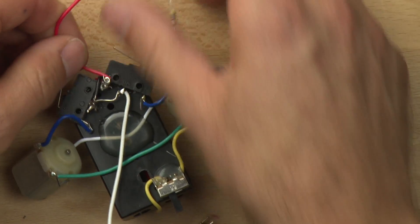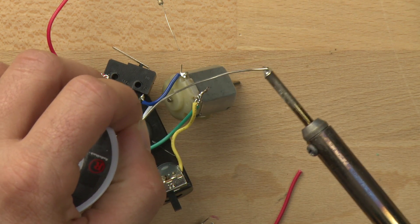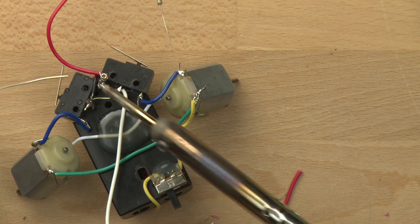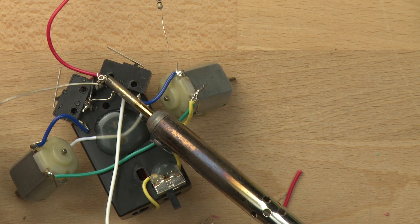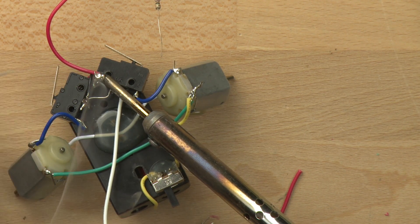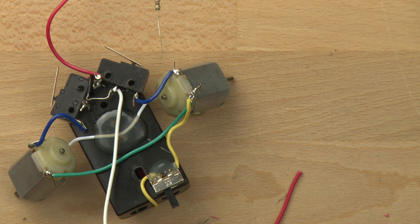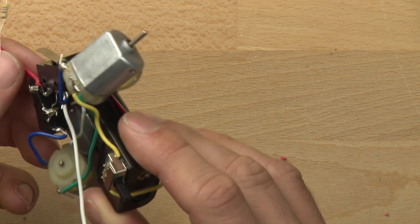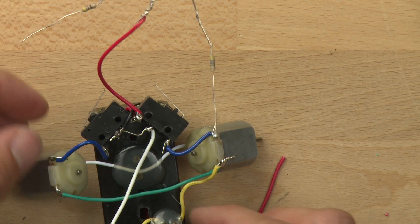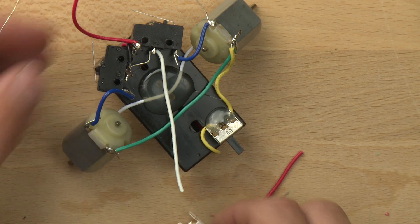Once we've got the red wire there, we can go ahead and solder that in place. And you can see it looks like we've got a pretty good connection to our positive.